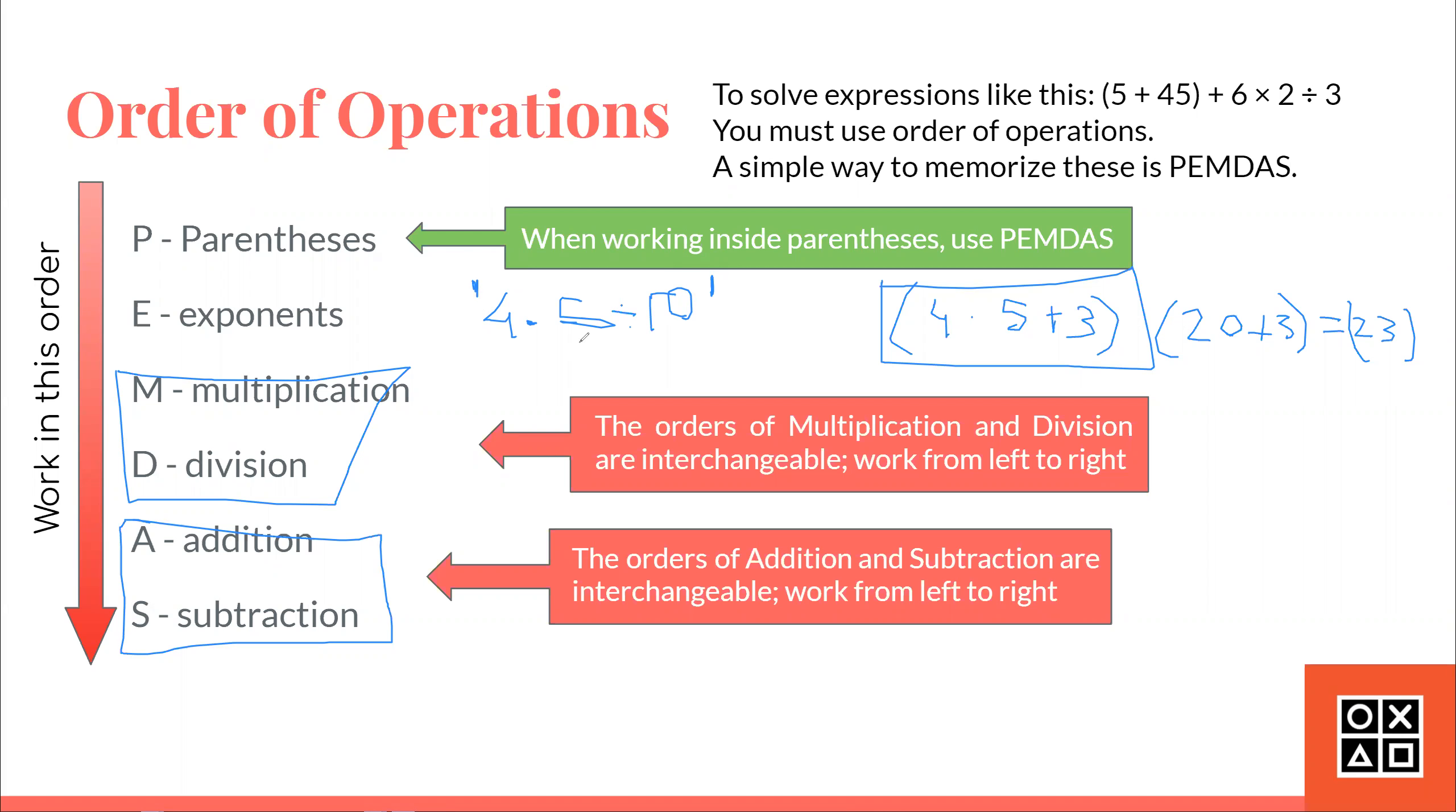So, you have to do 4 times 5, then get that answer, which is 20, and then divide it by 10, which equals 2.